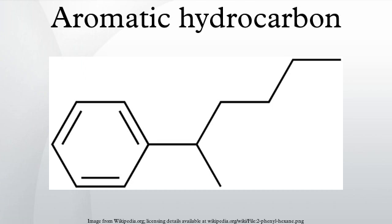Benzene and derivatives: benzene derivatives have from 1 to 6 substituents attached to the central benzene core. Examples of benzene compounds with just one substituent are phenol, which carries a hydroxyl group, and toluene, with a methyl group. When there is more than one substituent present on the ring, their spatial relationship becomes important, for which the arene substitution patterns ortho, meta, and para are devised. For example, three isomers exist for cresol because the methyl group and the hydroxyl group can be placed next to each other, one position removed, or two positions removed from each other.